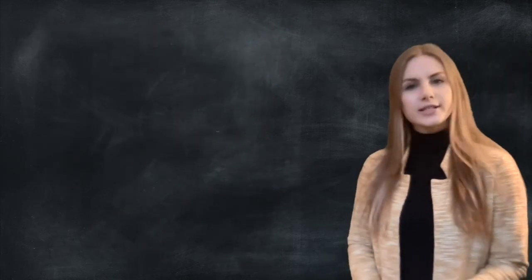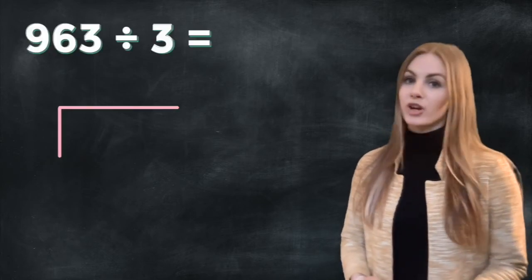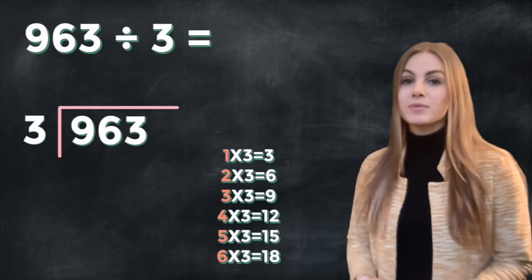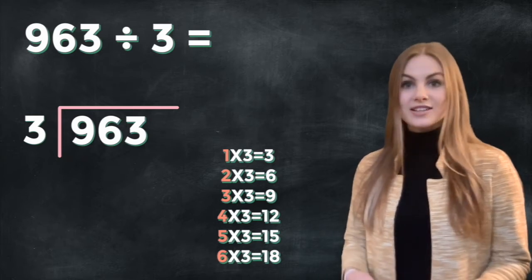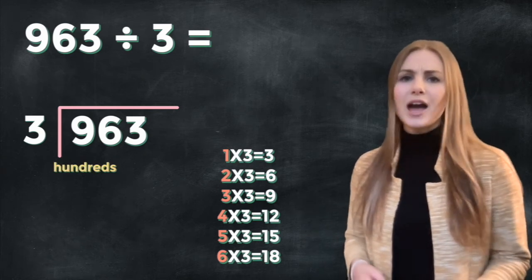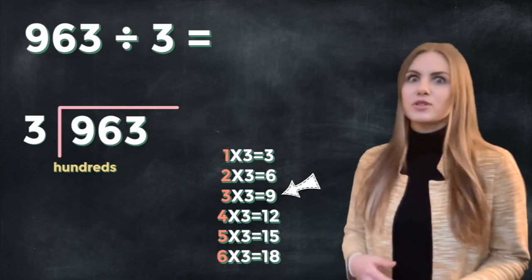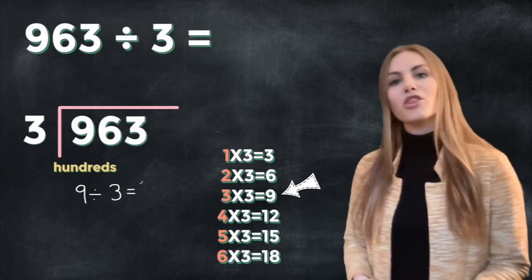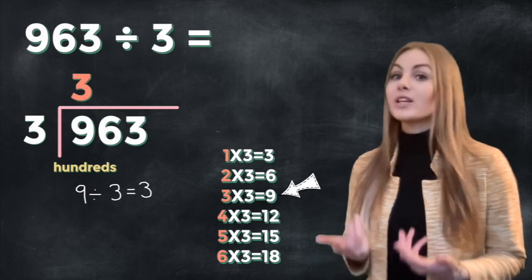Let's try another example with a slightly bigger number this time, 963 divided by 3. Now because we're dividing by 3, I know that my 3 times table is going to help me. So I'm going to write out my 3 times table. Just like last time we start with the largest place value, which in this case is the hundreds. So we want to know how many times does 3 fit into 9, or how many times does 3 fit into 900. So 9 divided by 3 equals 3. But we're putting it into the hundreds column because we're dealing with hundreds.